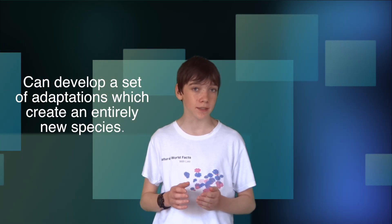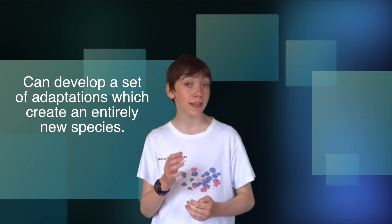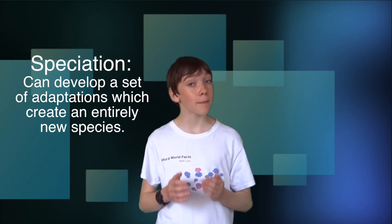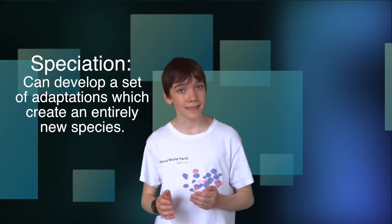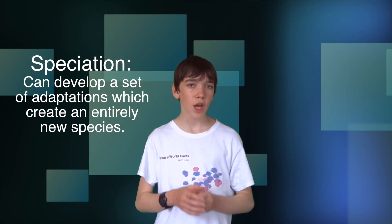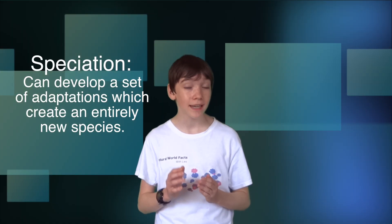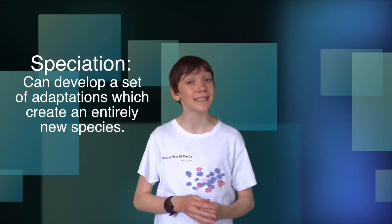In some cases, an organism can develop a set of adaptations that create an entirely new species. This process is known as speciation. An organism becoming isolated can lead to speciation. The huge variety of marsupials in Oceania is an example of how species can adapt to an isolated habitat.